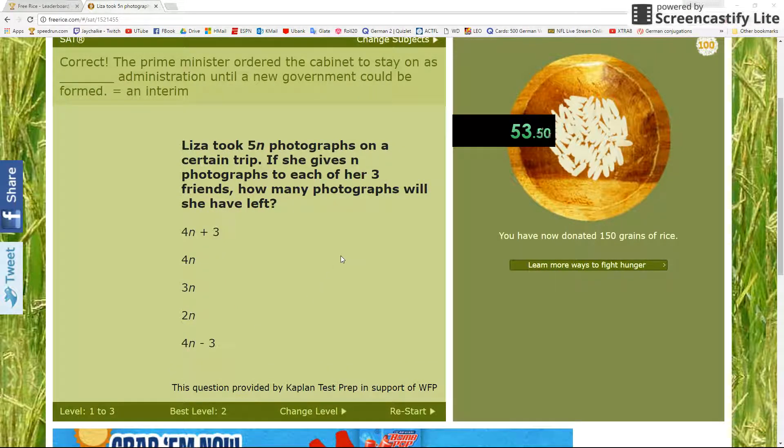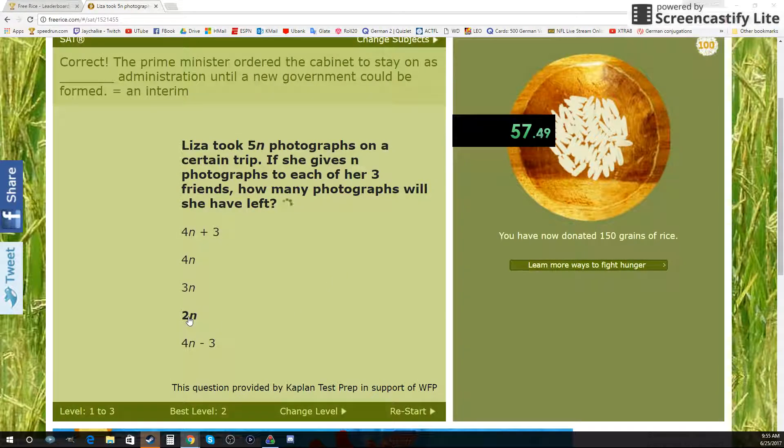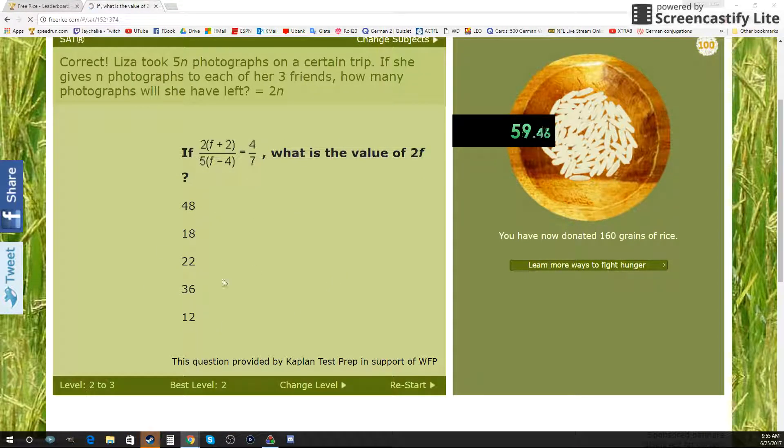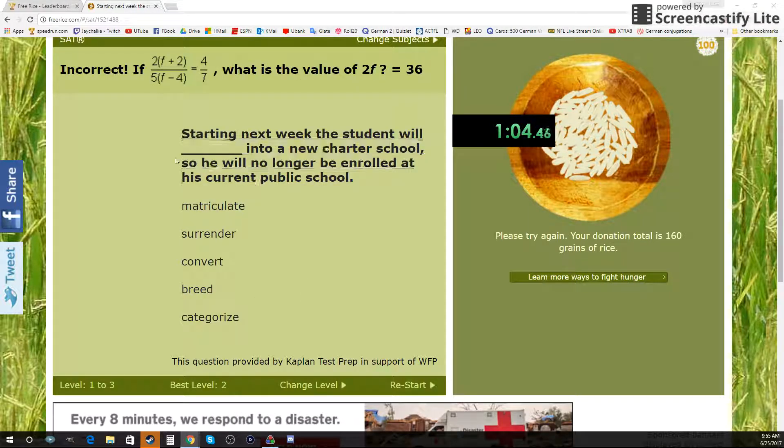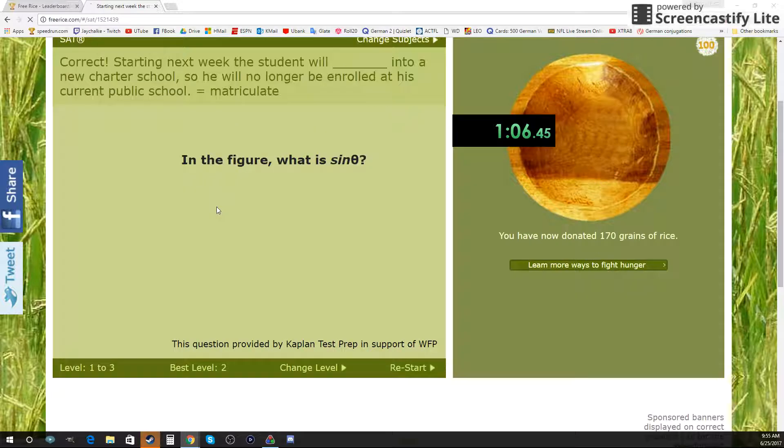She took 5 photographs on the photo trip and gives a photograph to each of her 3 friends. 2N. What is the value of... 12? No, 36. Starting next week, the student will matriculate.